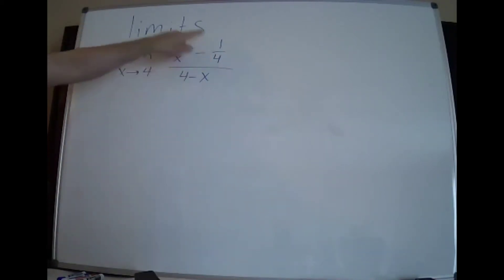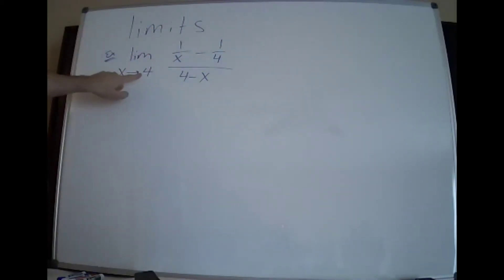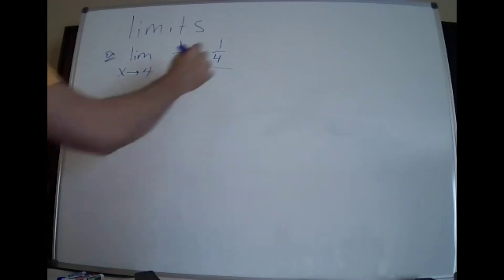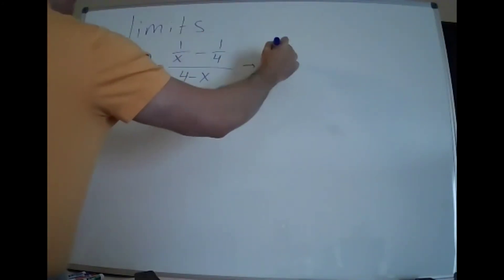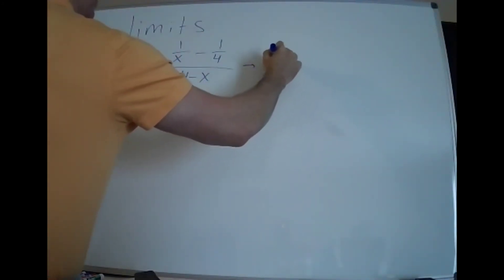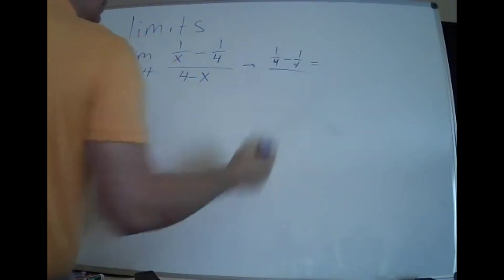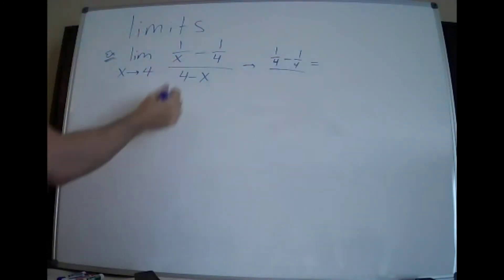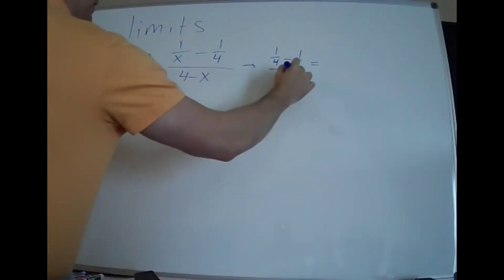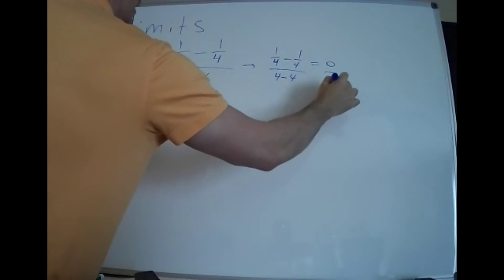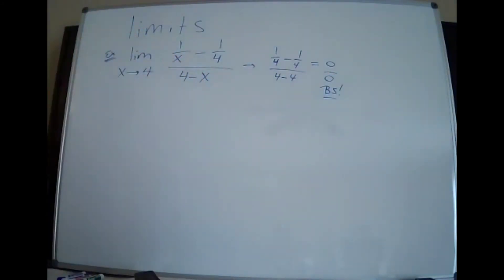Example number two — it's a fraction and it looks scary. Remember the first thing you try is technique one: plug this number in everywhere you see x. When you plug it into the top, you get 1 over 4 take away 1 over 4, which is 0. And on the bottom you get 4 take away 4, which is 0. So again you get undefined zero over zero that doesn't work.